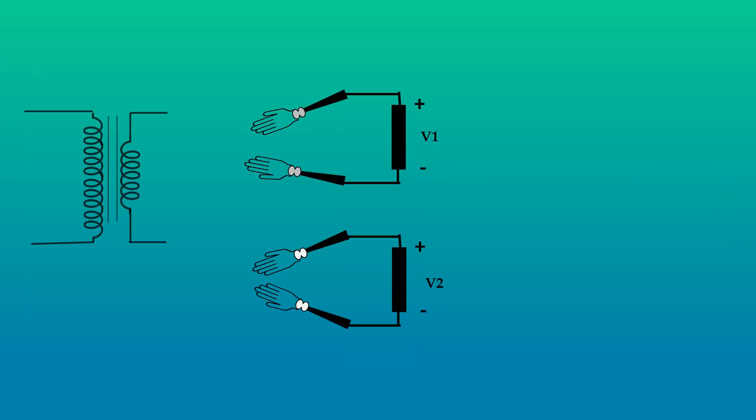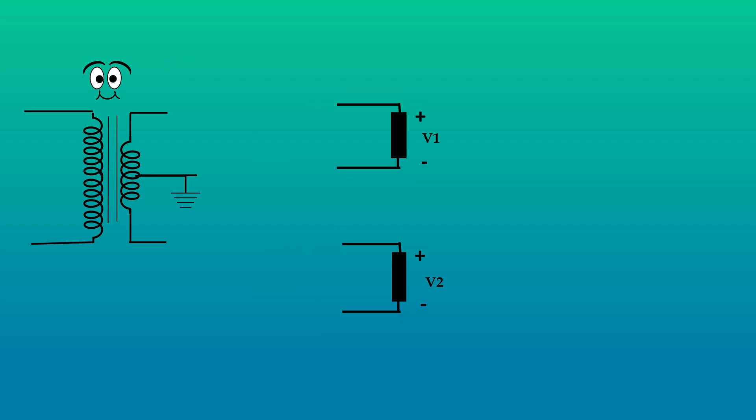Similarly, when two loads require supply from the same transformer, how is this problem solved? In this case, instead of a regular transformer, a center tap transformer is used.